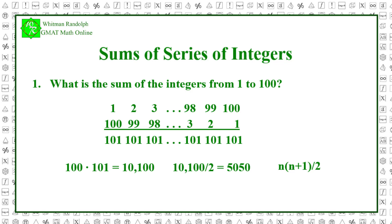In the problem we just solved, n was 100, so n plus 1 was 101. We multiplied 100 and 101, got 10,100, and then we divided by 2 to get the final answer, 5,050.